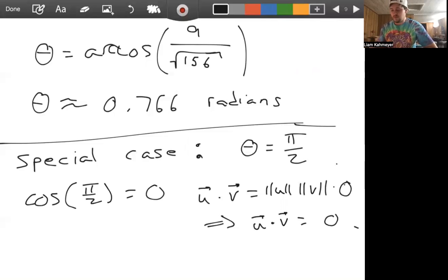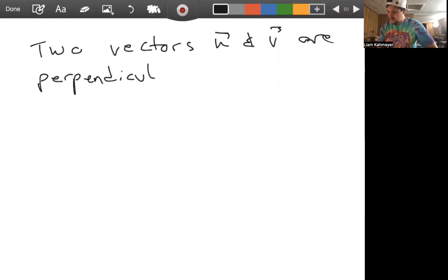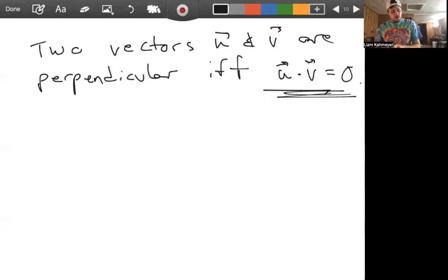What we can deduce from this is that two vectors U and V are perpendicular if and only if the dot product is 0. So we have a way of understanding perpendicular vectors based on their dot product.